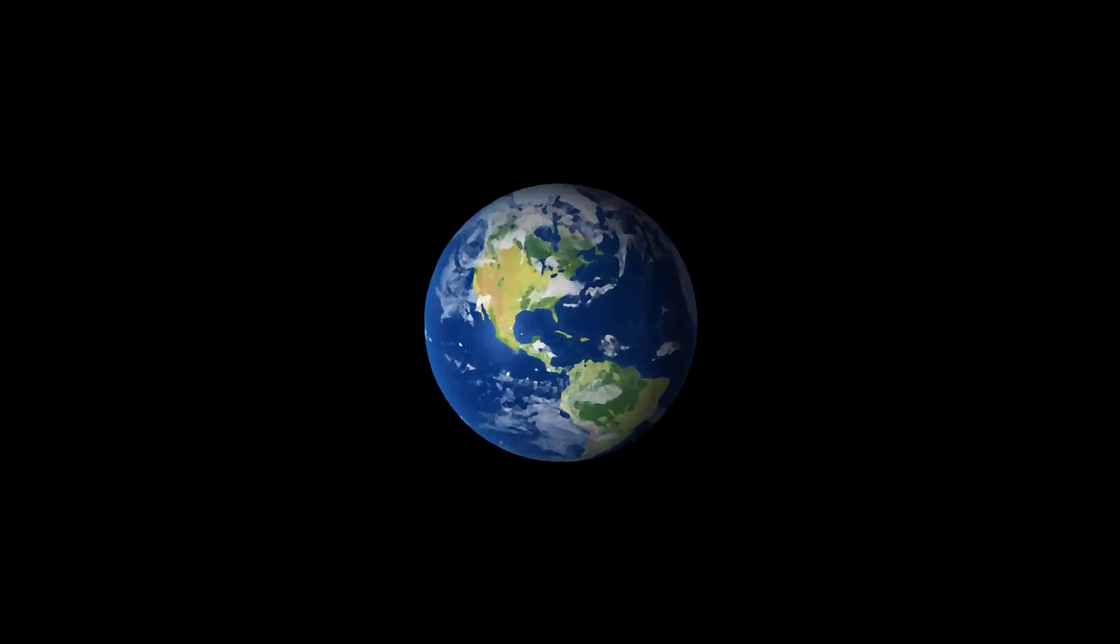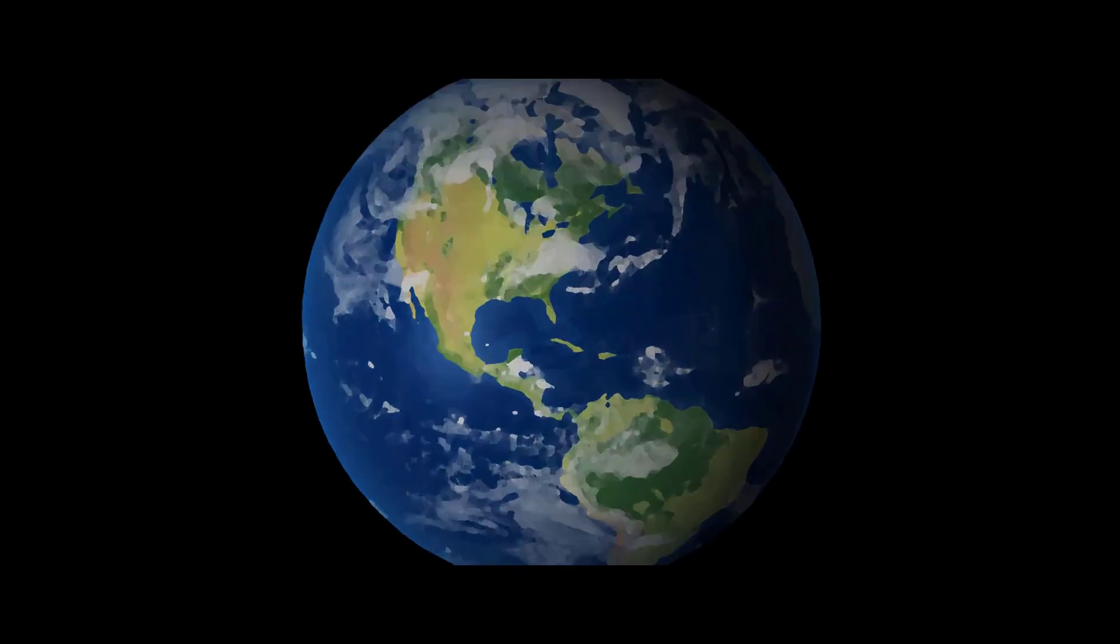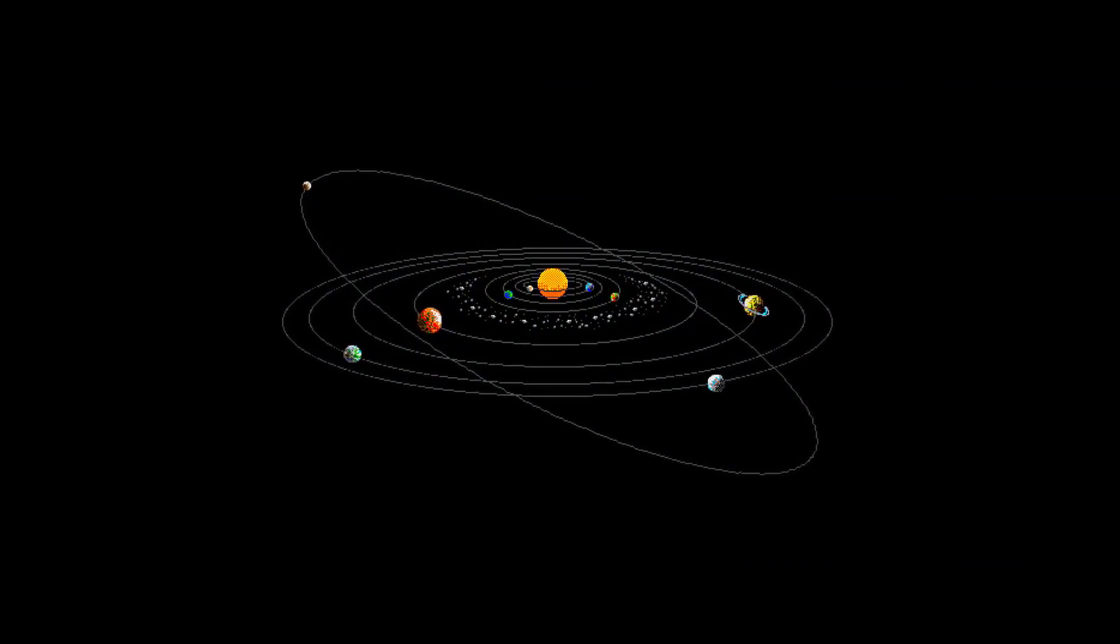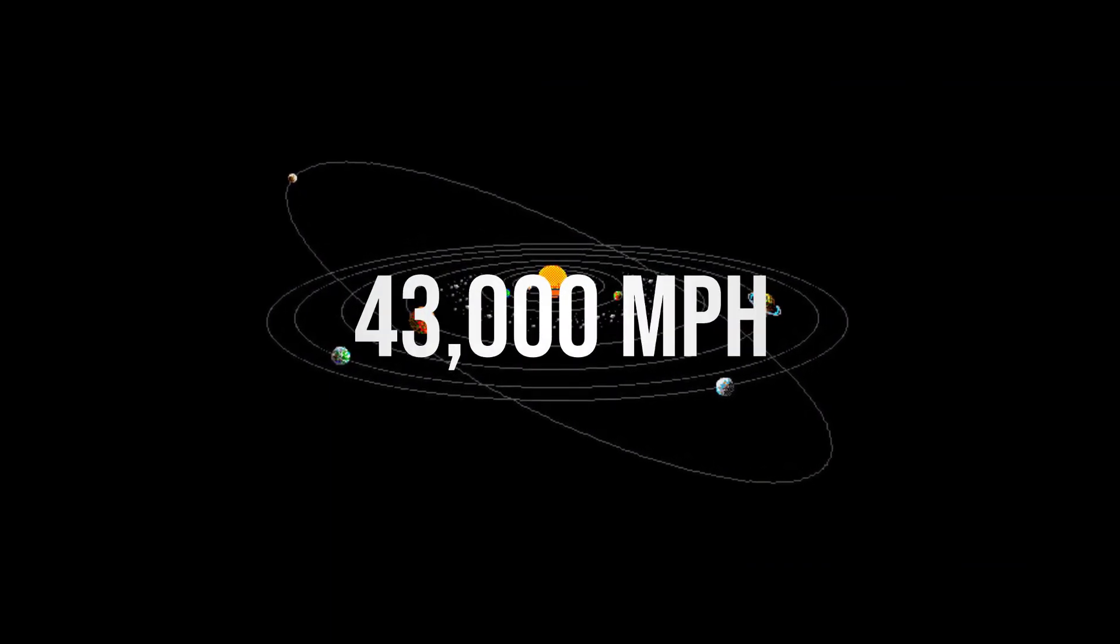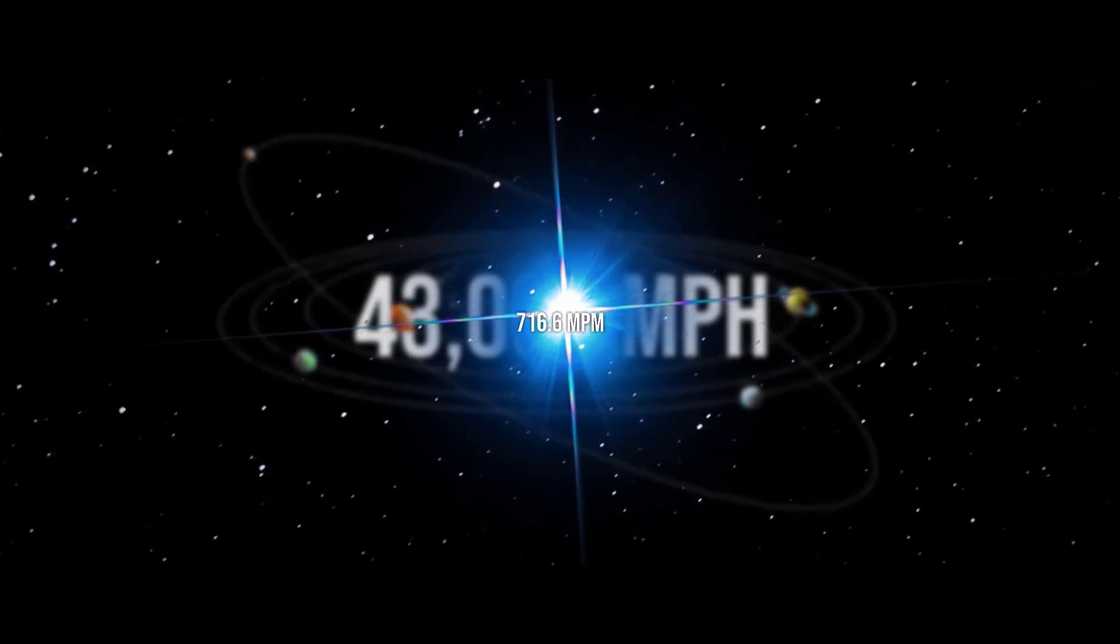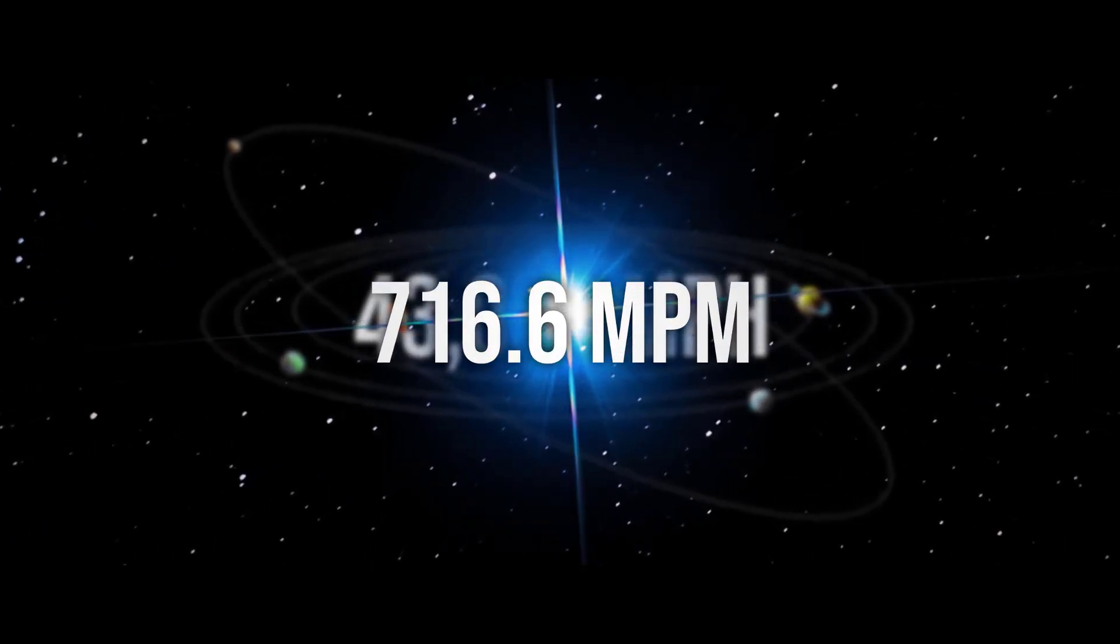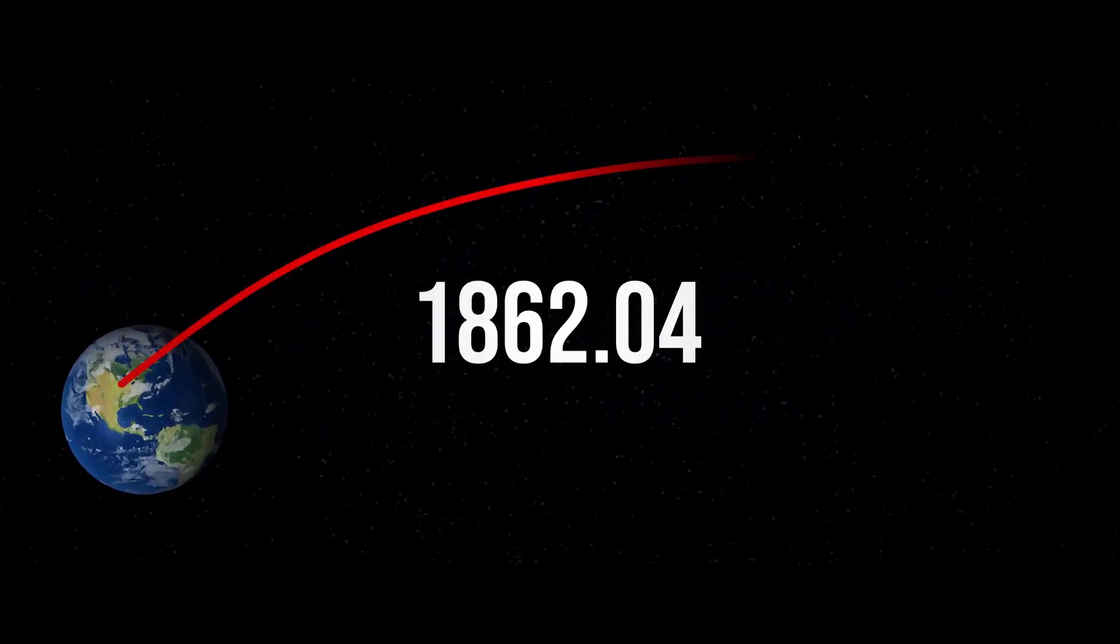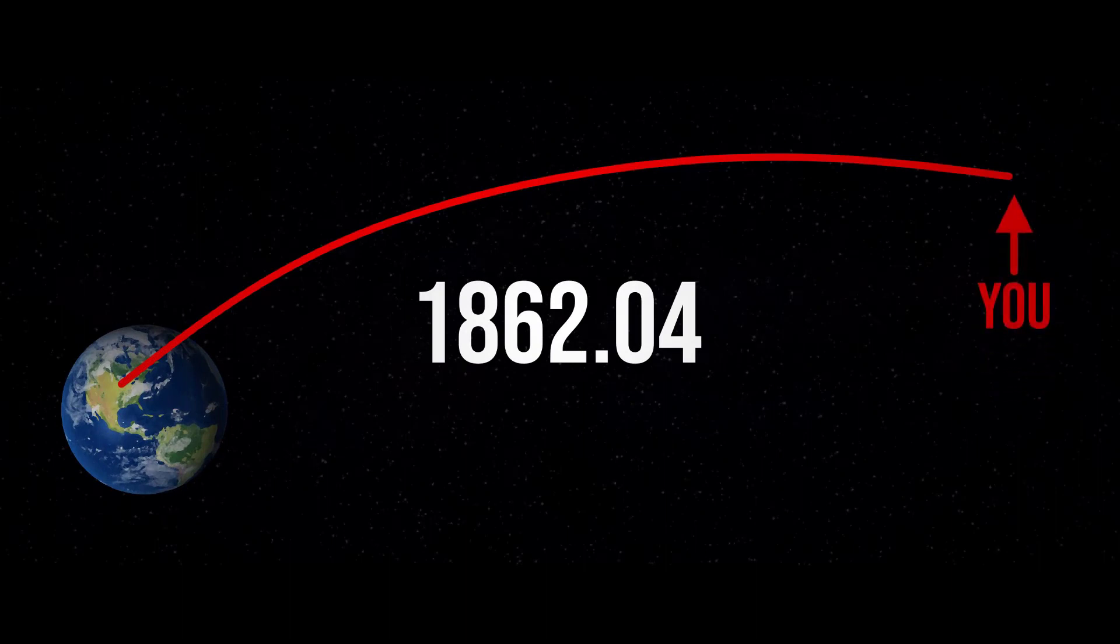An entirely different factor that you need to be thinking about is not only how fast the Earth is moving, but how fast the solar system is moving. It's been calculated that the solar system is currently moving around 43,000 miles per hour in the general direction of Vega, the bright star. That's about 716.6 miles per minute, which adds to the total, putting us around 1,862.04 miles away from our starting point.